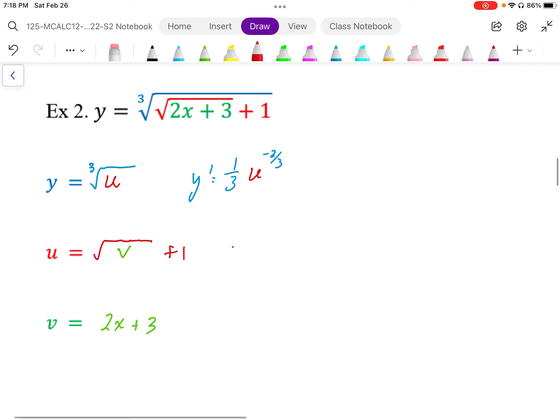U prime then is equal to 1 over 2 root v. And then the final embedded function v, the derivative of v is just going to be 2. So we're just going to multiply by 2 at the end.